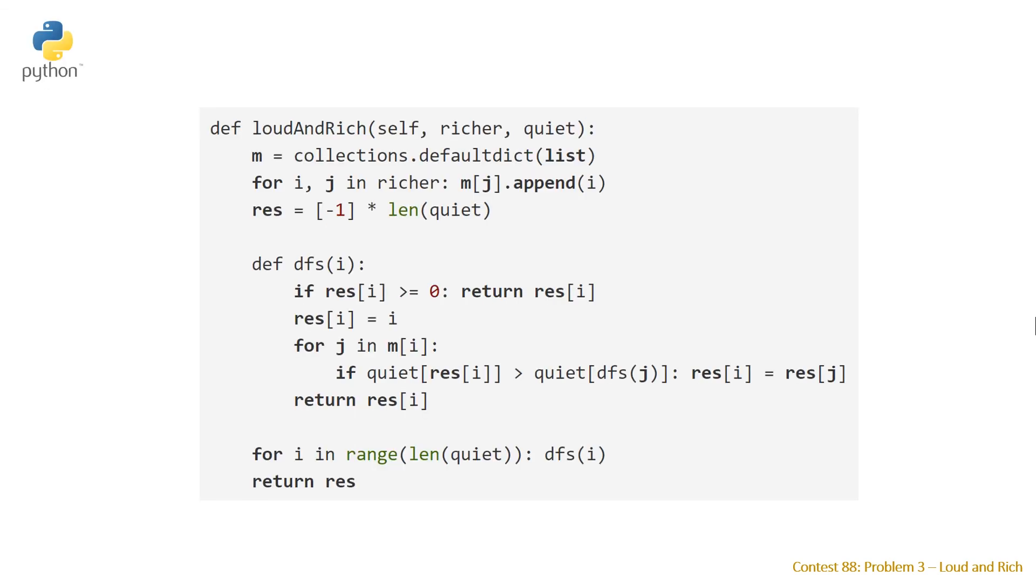And last but not least, the Python solution. You can see this looks a little bit different, but it's the exact same idea as the solution before, using a map or a dictionary, as it's called in Python, of lists. We have a bit of a different way to initialize our return array res with this notation: negative one times the length of quiet. Then we have our DFS function, which looks once again very similar to our code in both C++ and Java, just slightly different notation.